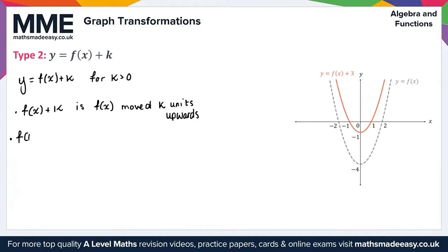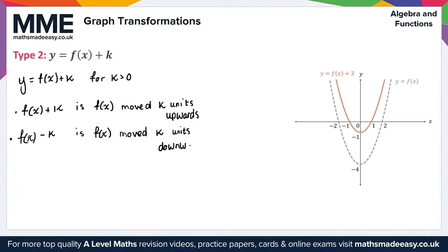And f of x minus k is f of x moved k units downwards. In this example, f of x is equal to x squared minus 4, and we also have y equals f of x plus 3. All we do is add 3 to the y-coordinates of f of x. This curve crossed the y-axis at minus 4, so adding 3 gives minus 1. That gives us everything we need for Type 2.